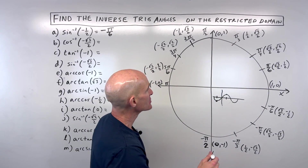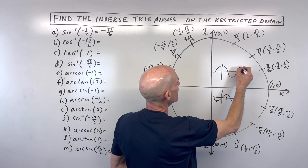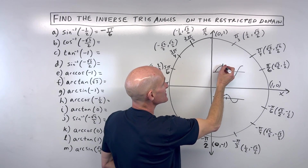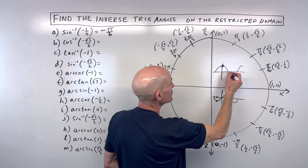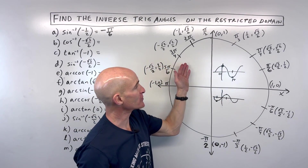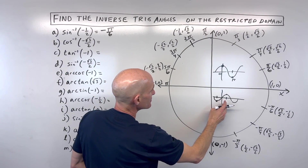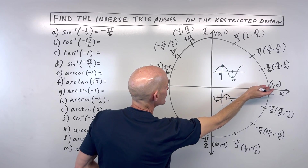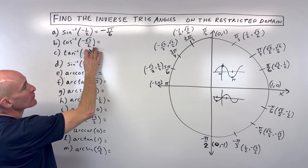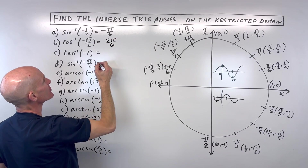On the restricted domain for cosine, we're looking at from zero to pi. Cosine fails the horizontal line test, so mathematicians restricted the domain from zero to pi — putting us in the first and second quadrants — so we only get one answer. So sine inverse goes from negative pi over two to positive pi over two; cosine inverse goes from zero to pi. Cosine of what angle equals negative root three over two? That occurs at five pi over six.